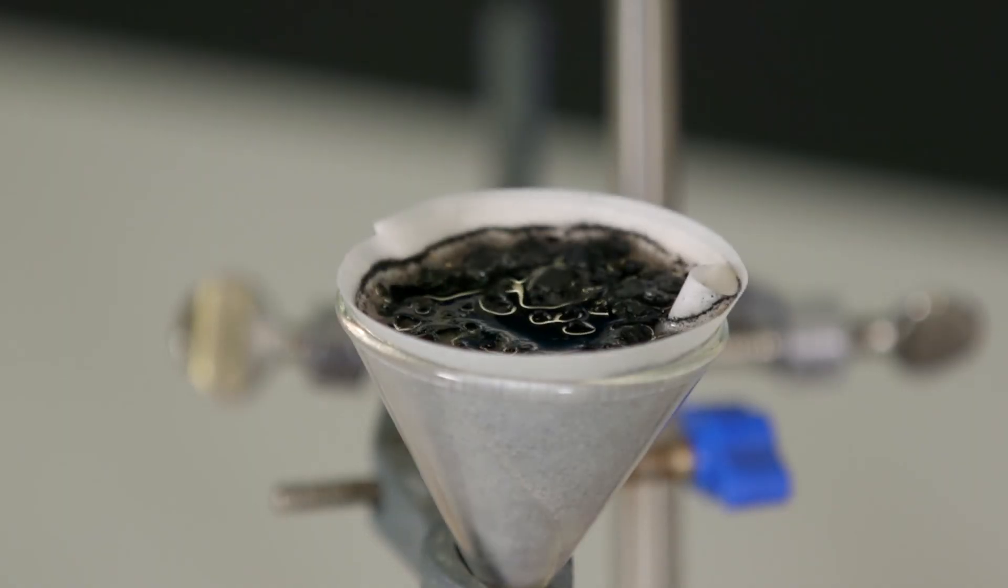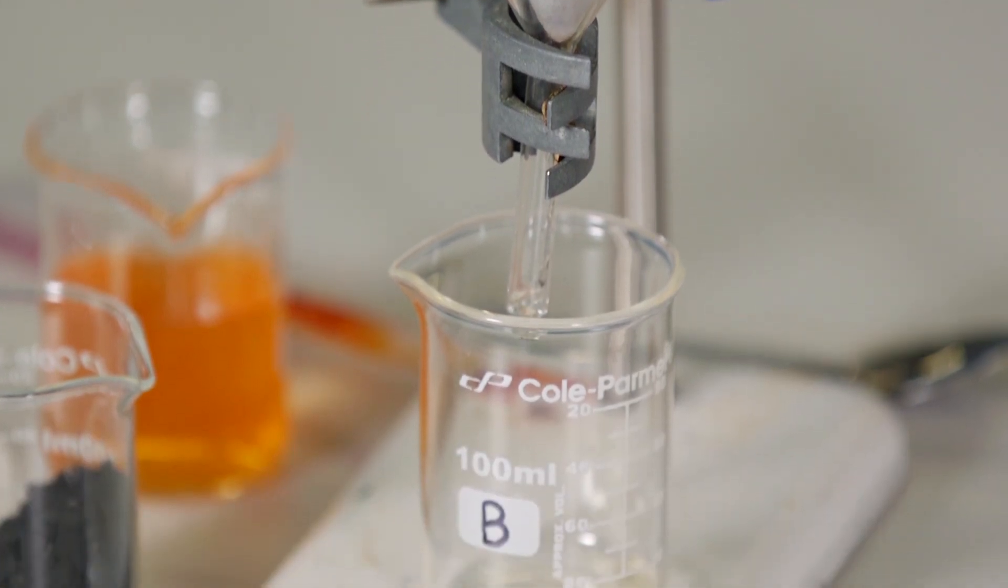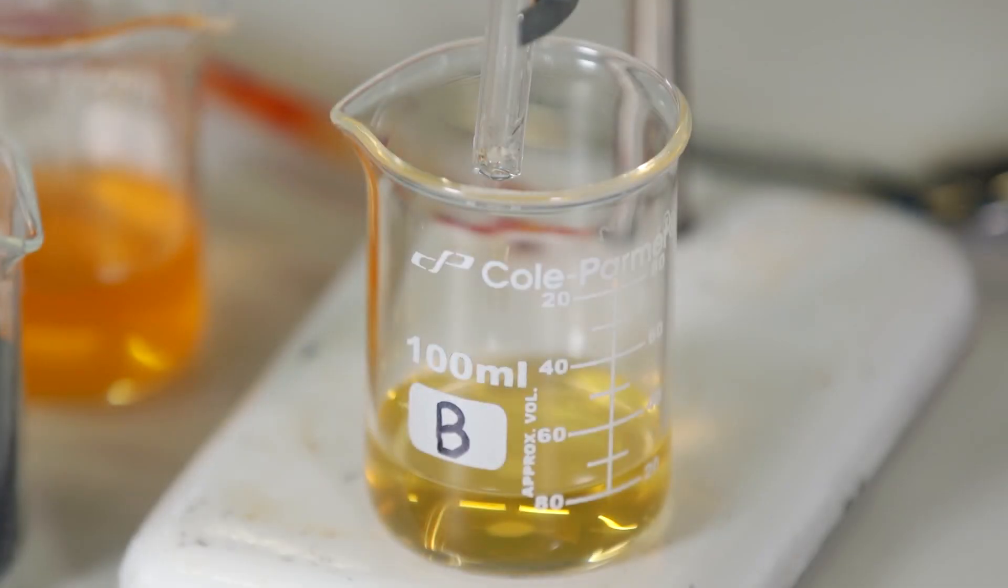As the colored water flows through the activated carbon, the microscopic pores absorb the food coloring particles, removing them from the water, making the water clearer.